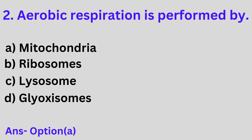Second question: The aerobic respiration is performed by A. Mitochondria, B. Ribosome, C. Lysosome, D. Glyoxysome. Option A is the correct answer. Aerobic respiration is performed by mitochondria.